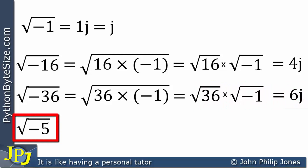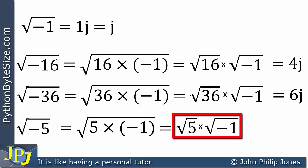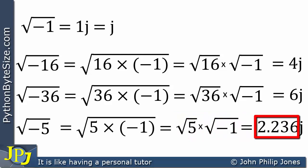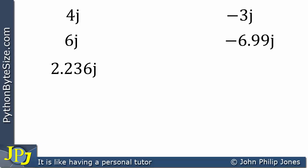Here's another example: the square root of minus 5. That can be split up as 5 times minus 1, giving the square root of 5 times the square root of minus 1. The square root of 5 is approximately 2.236, and the square root of minus 1 is j, so that equals 2.236j. So we have imaginary numbers 4j, 6j, and 2.236j. Choosing some other imaginary numbers at random: minus 3j, minus 6.99j, and minus 222j. All six are examples of imaginary numbers.